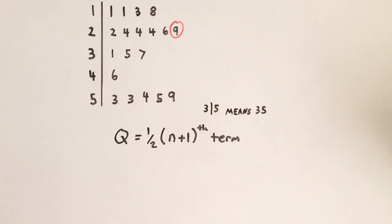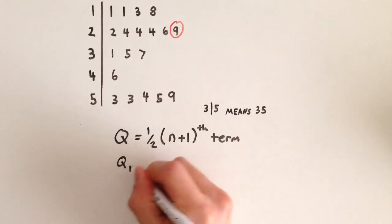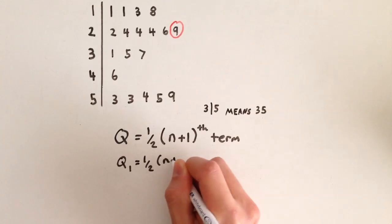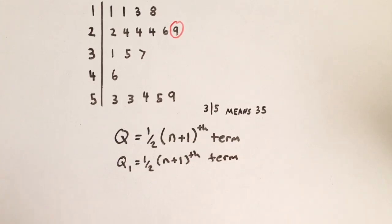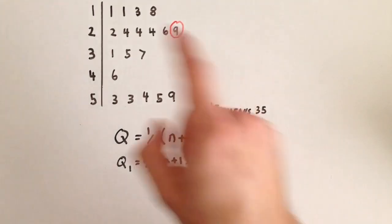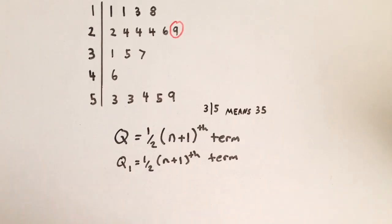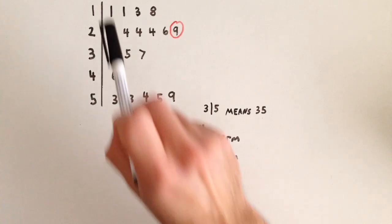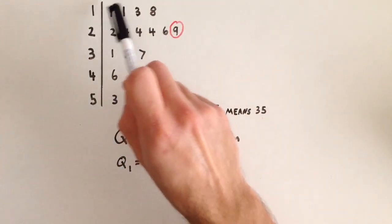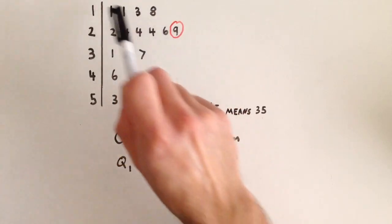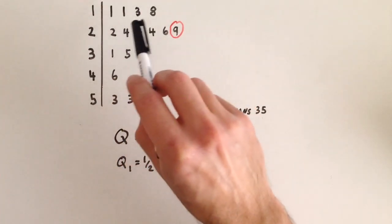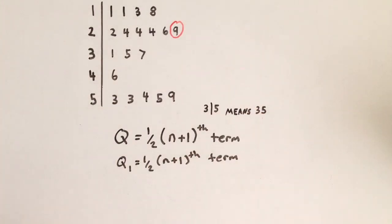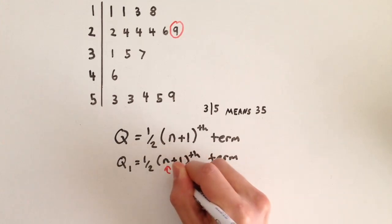Let's find our upper and lower quartiles, Q3 and Q1. Q1 equals one half of (n plus 1)th term. When finding Q1 and Q3, n does not represent the number of data values in the whole set. For Q1, n represents the number of data values between your start number and your median. Counting those values gives us 9, so n for Q1 equals 9.